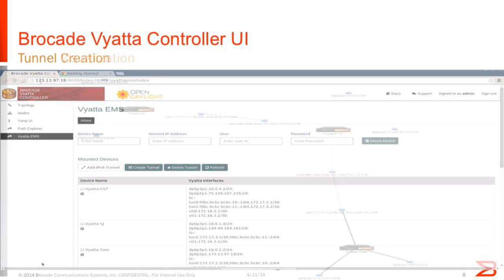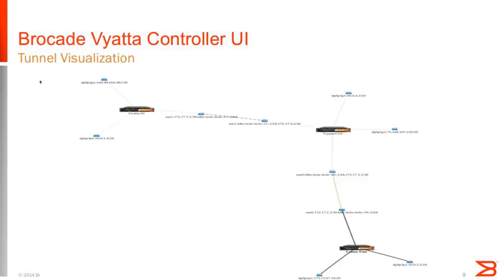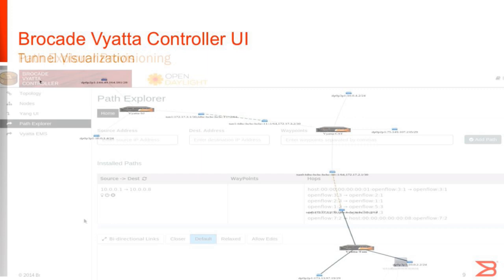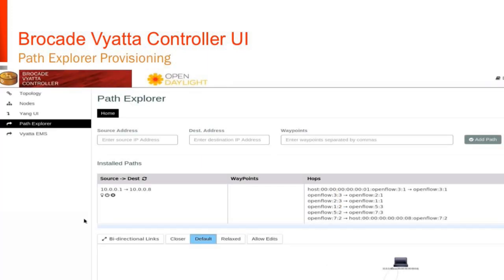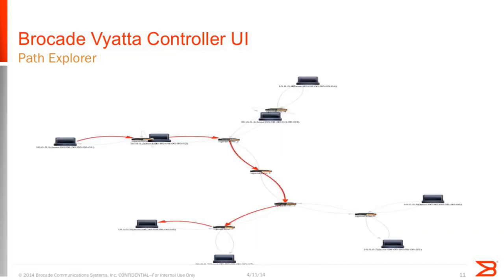This is the tunnel visualization we have provided, which clearly shows the Vyatta routers at different locations and how they are connected using IPv4 or IPv6 tunnels. We have also added a feature called Path Explorer to the OpenDaylight controller. If you have multiple OpenFlow switches on the network, it will find the shortest path or a path based on any QoS parameters. You configure it from source to destination, and it tells you what path it will follow on the OpenFlow network — and this is the visualization of that path.